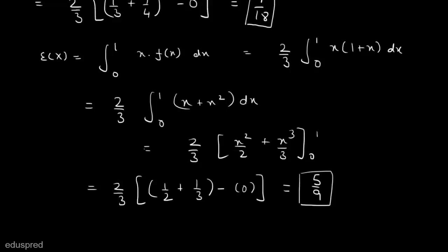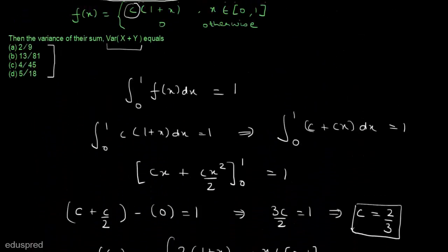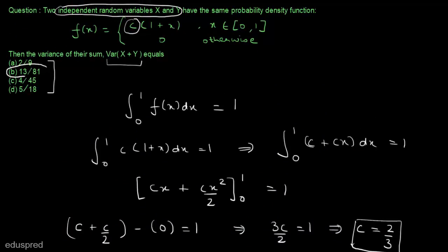We know that variance of (x + y) equals 2·(E[x²] − (E[x])²). So the variance equals 2·(7/18 − (5/9)²), and solving this we get 13/81. So the variance of x plus y is equal to 13/81, which means option b is the right answer. And this is all for this question.